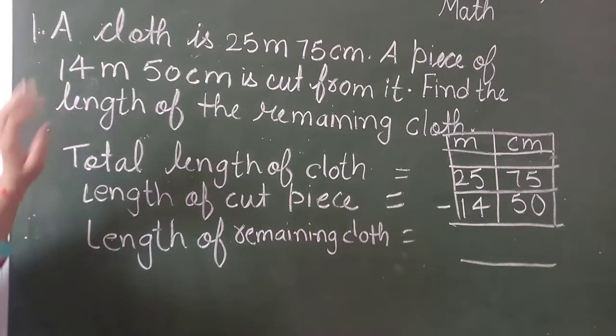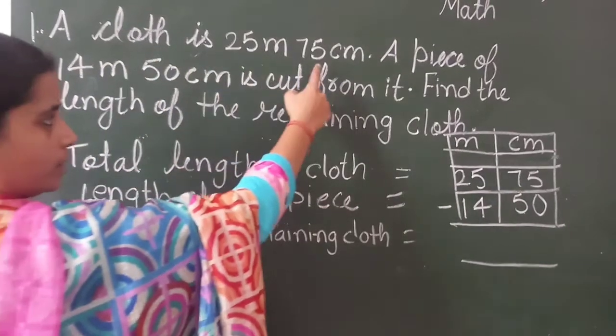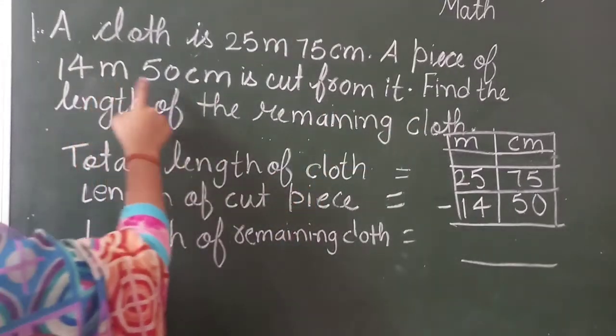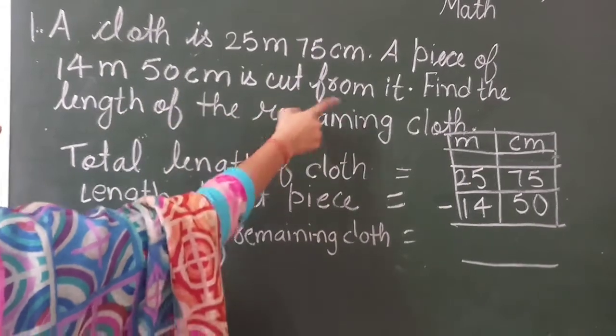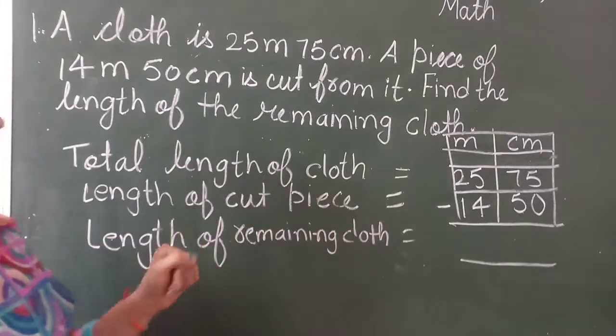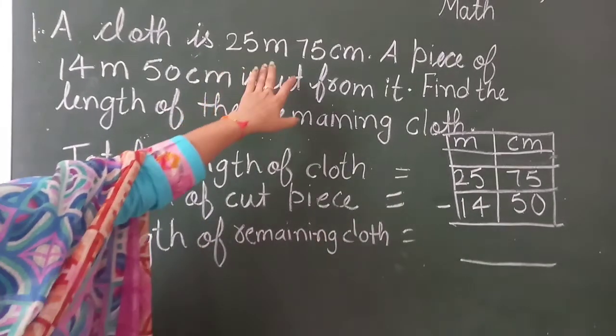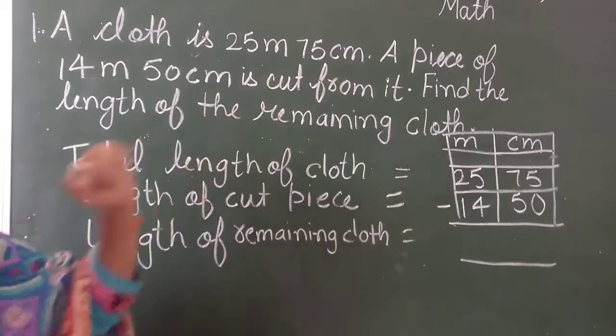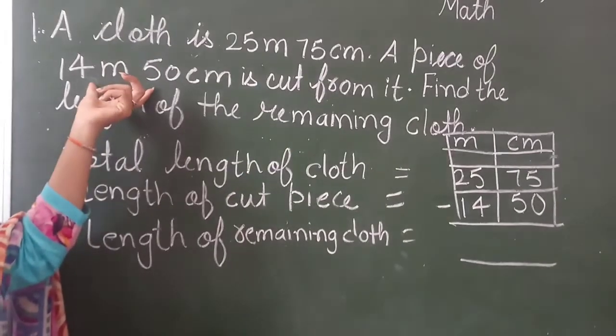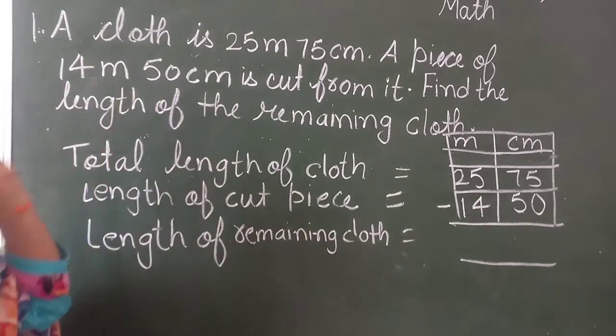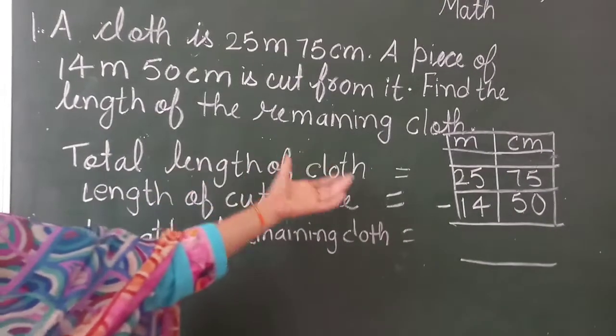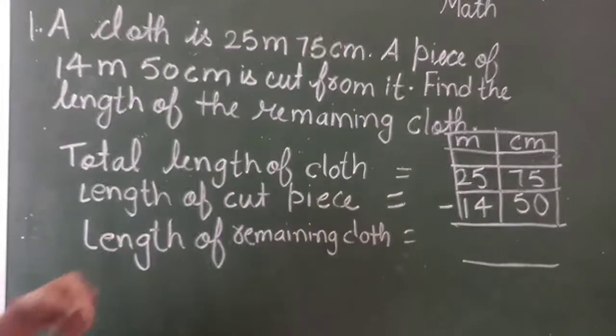The first statement is given. A cloth is 25 meter 75 centimeter. A piece of 14 meter and 50 centimeter is cut from it. Now find the length of the remaining cloth. We had a cloth that is 25 meter and 75 centimeter. But out of that we had cut one piece and the piece was 14 meter and 50 centimeter. So now what we have to find? We have to find the remaining cloth after cutting the cloth.